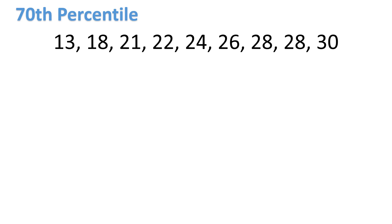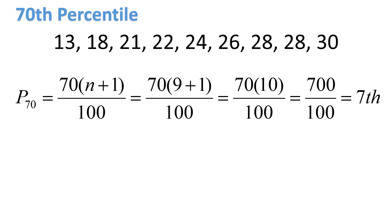Next, let's find the 78th percentile. The numbers are already arranged from lowest to highest. For the position: 70 × (N + 1) ÷ 100. With N = 9, we get 9 + 1 = 10; 10 × 70 = 700; 700 ÷ 100 = 7. The 78th percentile is at the 7th position, which is 28.